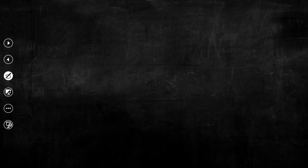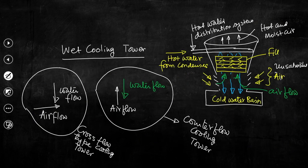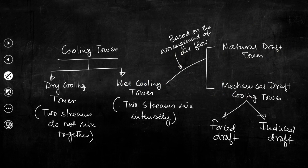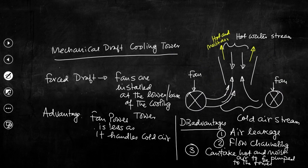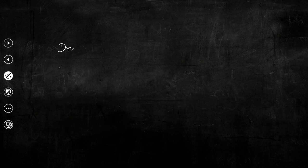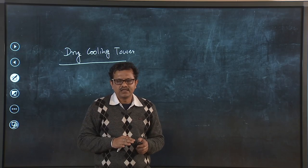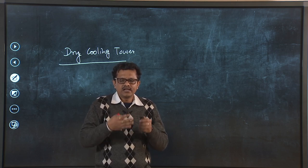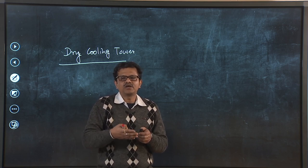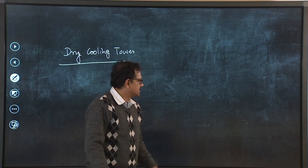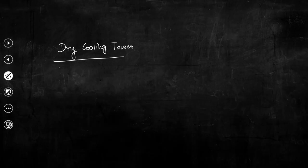Now let us discuss about the dry cooling tower. Going back to the previous discussion — we have covered wet cooling tower, both natural draft and mechanical draft. Now for dry cooling tower: in this particular type, two different streams do not mix together. Instead, heat exchange takes place while one stream passes through the tubes and another stream passes over the tubes. To understand the mechanism of this heat transfer it would be convenient to discuss it with a schematic.